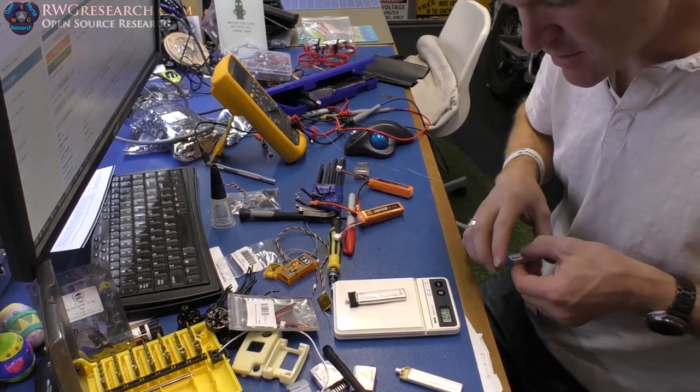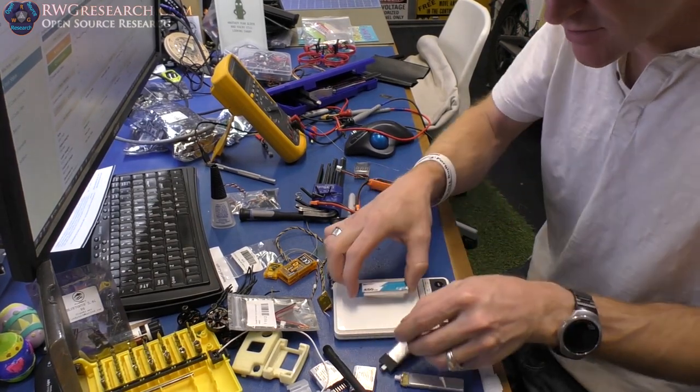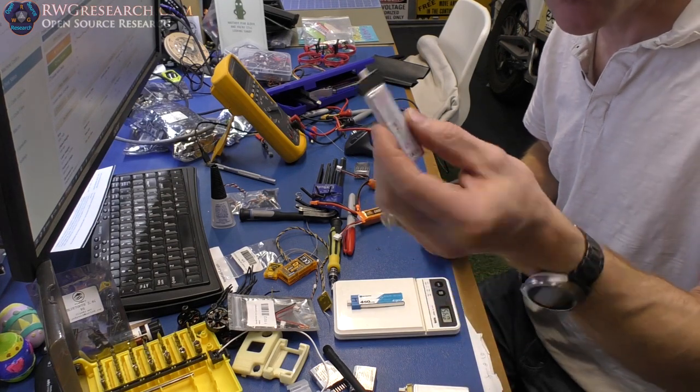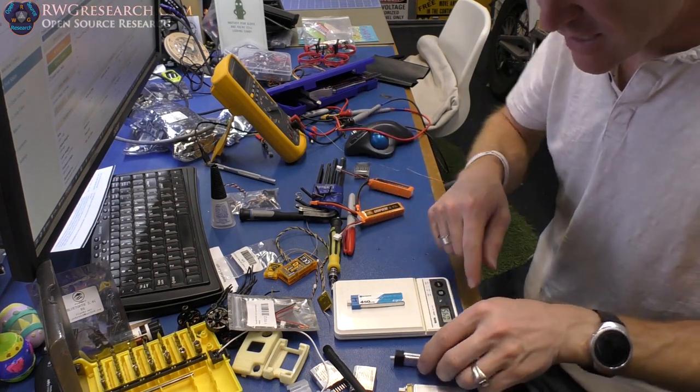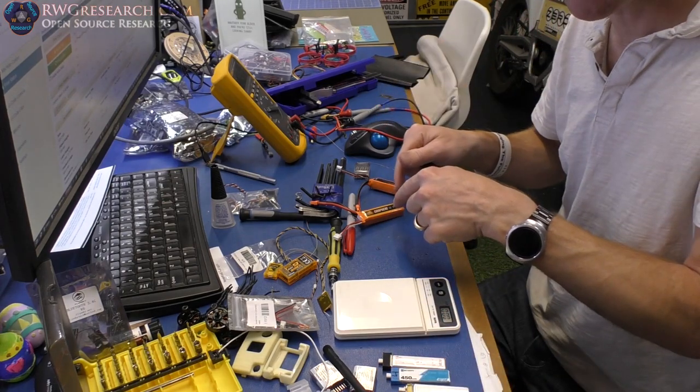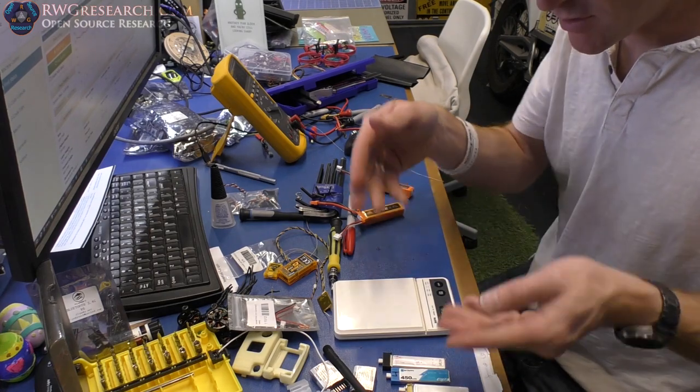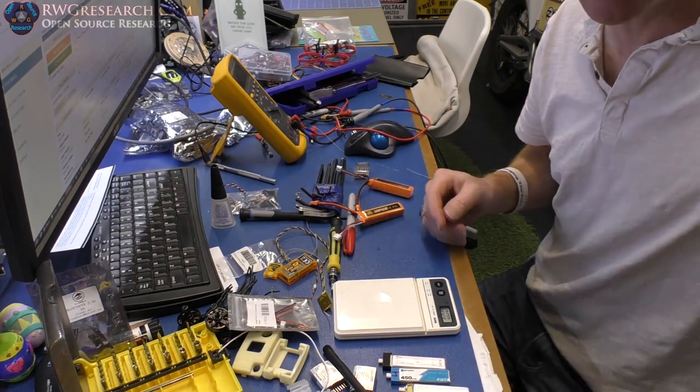So these are now 0.5 ounces. These Betaflights are 0.45. Add a little glue on there will be looking good. That's in ounces by the way. Let me show you how to disassemble one of these and put on these connectors and 3D print and glue together the whole thing. Here we go.